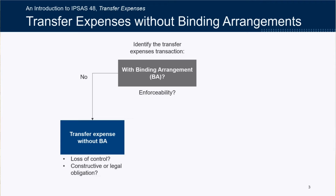So what happens when the transfer is without a binding arrangement? Every transaction will be different, but when a transfer does not involve a binding arrangement, the transfer provider will typically lose control of the resources once it is transferred. This results in an immediate expense since there won't be an enforceable right which could lead to the recognition of an asset. When there is no binding arrangement, the transfer provider also needs to consider if there is a constructive or legal obligation related to the transfer. For example, a transfer provider could communicate to external parties that it will transfer resources, and this may lead to the recognition of a provision and an expense under IPSAS 19, provisions, contingent liabilities, and contingent assets.